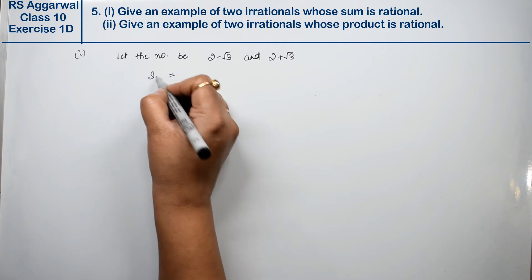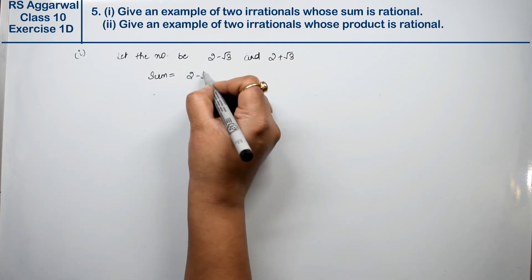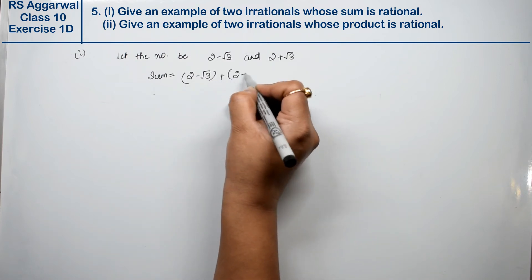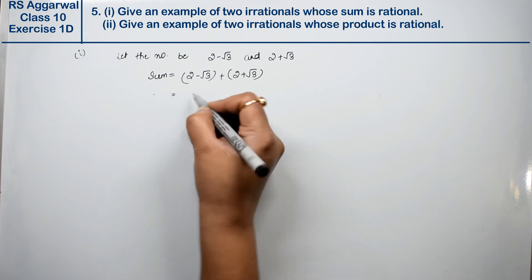What is the sum? The sum is (2 minus root 3) plus (2 plus root 3). Now we have opened it.